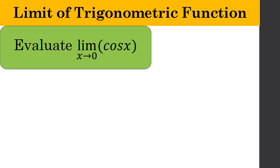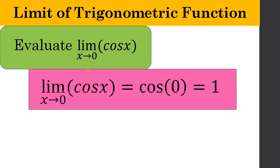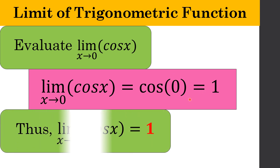Evaluate the limit of cos x as x approaches 0. This is defined for any real number, so we use direct substitution. The limit of cos x as x approaches 0 is equal to cos(0). Using your calculator, the answer is 1. Hence, the limit of cos x as x approaches 0 is equal to 1.